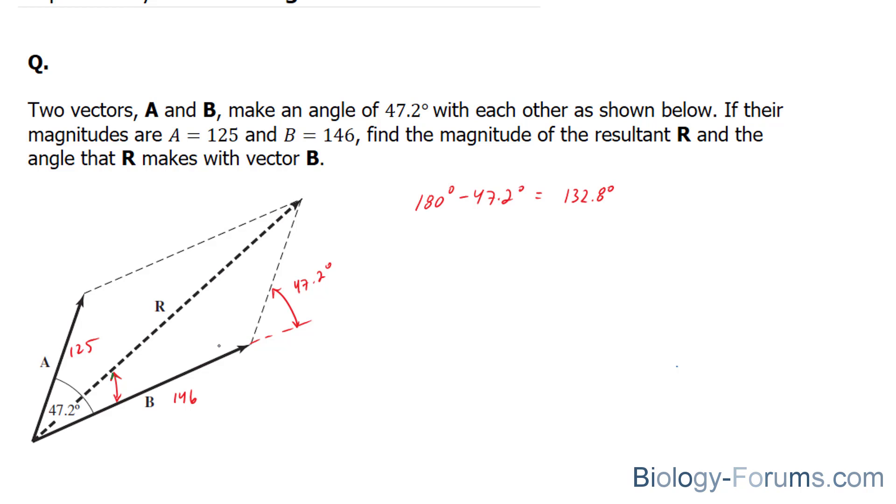So, this angle right here, this obtuse angle, is 132.8 degrees. In total, if we were to take these three lines, this triangle, it's an obtuse triangle. Given that it's an obtuse triangle, you use the sine law or the cosine law.